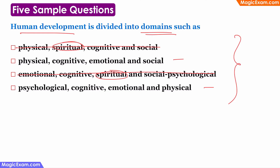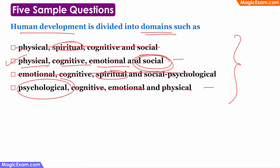Looking at options two and four, physical, cognitive, and emotional are common to both. So we have to choose between social development and psychological development. Both are correct domains, but social development is mentioned in all the textbooks. Therefore, the correct answer is option two — physical, cognitive, emotional, and social development are the commonly mentioned domains. Psychological development is usually clubbed with emotional and cognitive development. So option two is the strongest answer.